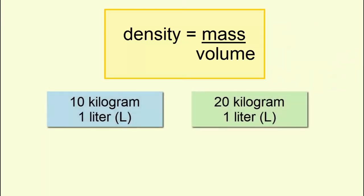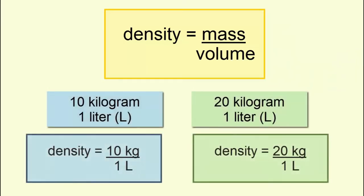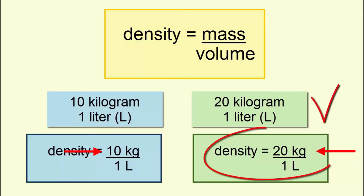Imagine two objects of the same volume but with different masses. Same denominator, different numerators. Which object is denser? The object with the greater mass, numerator, is the denser one.